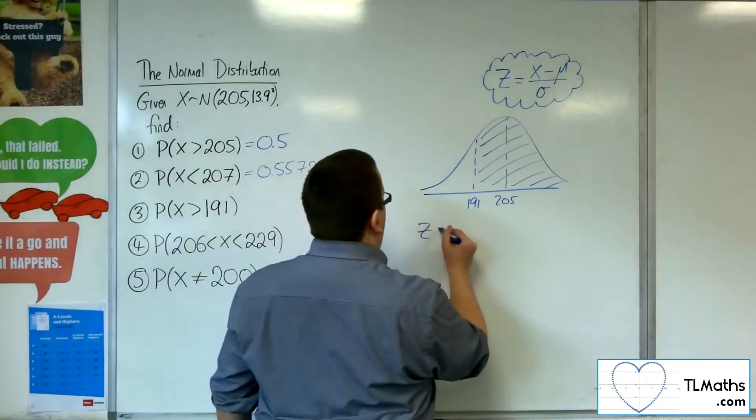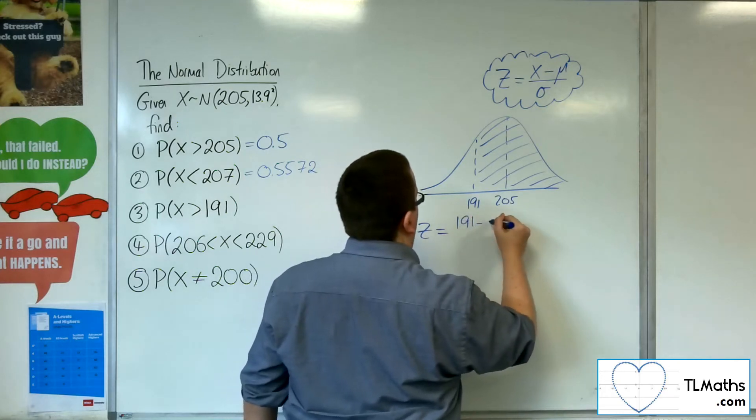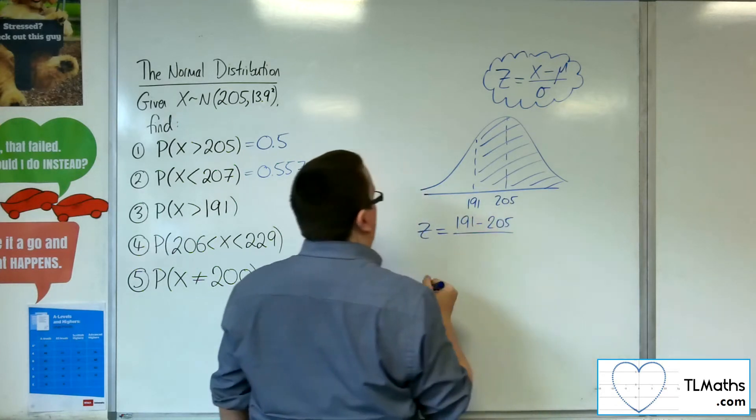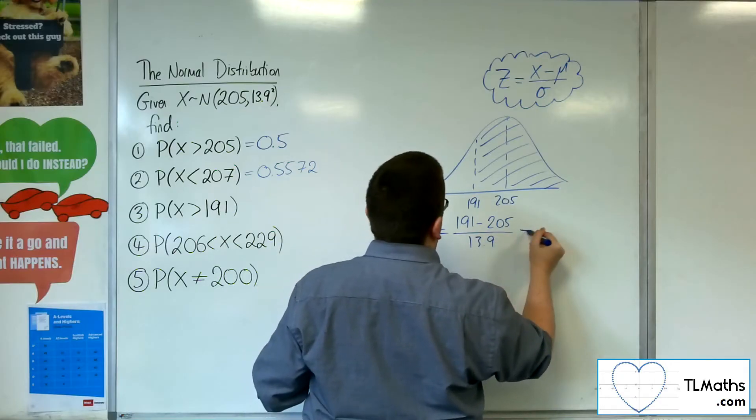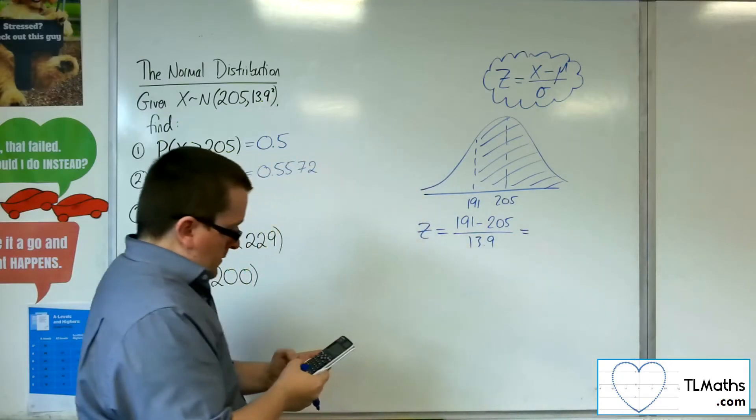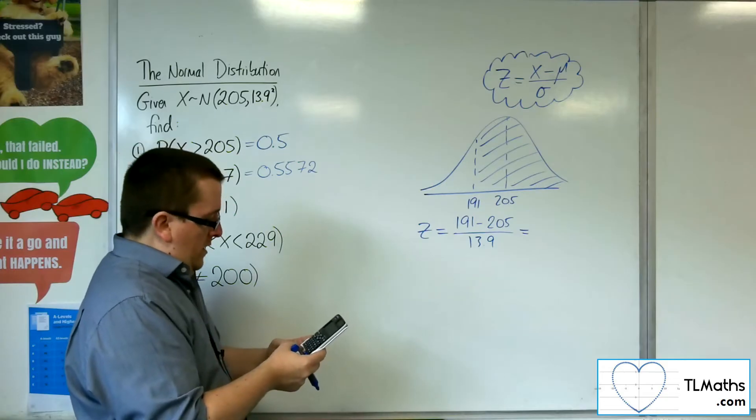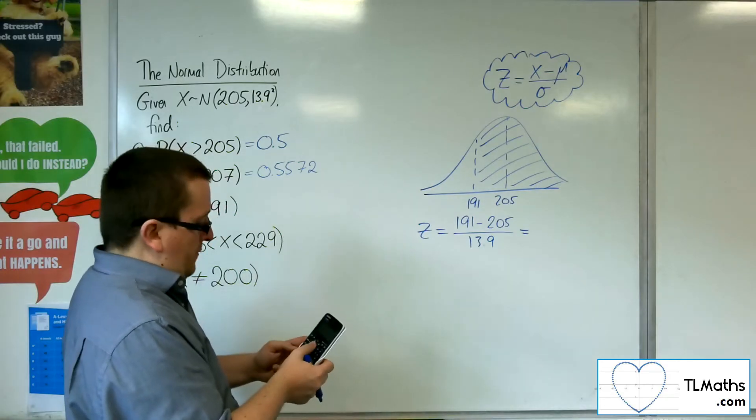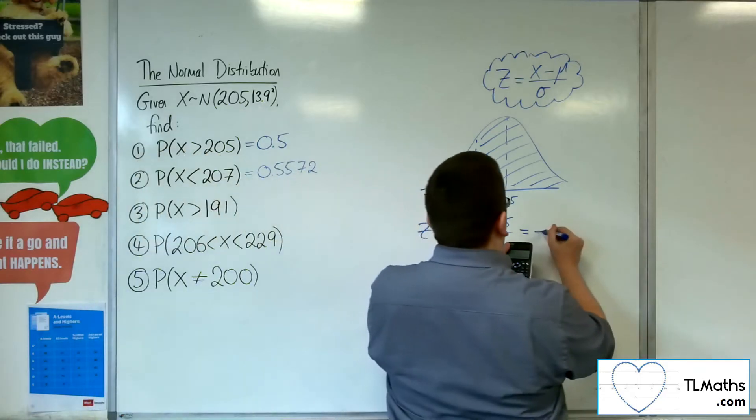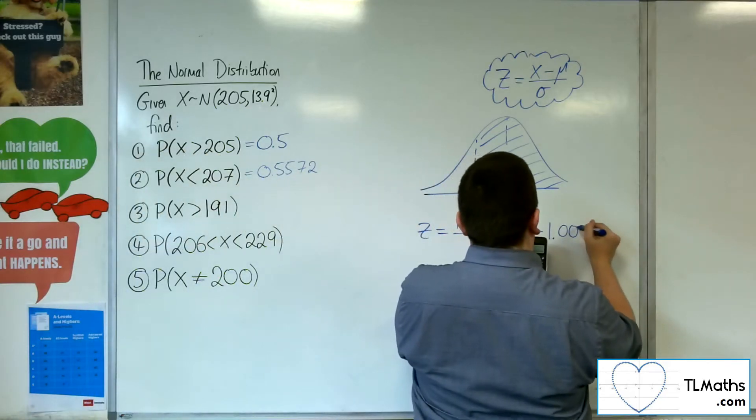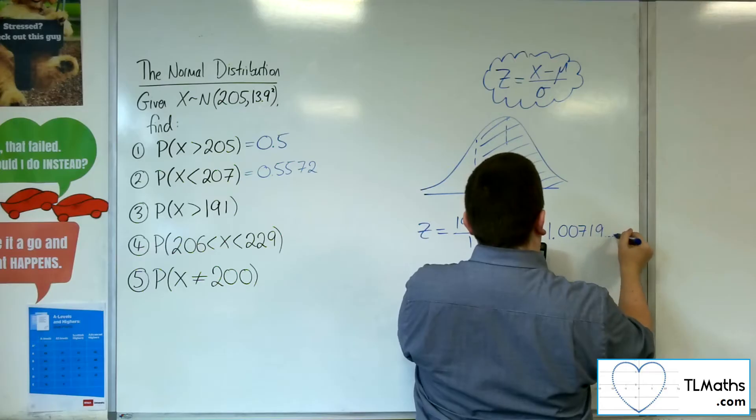So the z value would be 191 take 205, over the standard deviation, which was 13.9. So 191 take 205, over 13.9, gets me minus 1.00719.